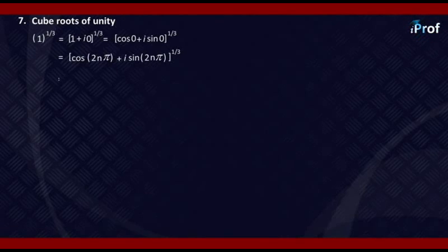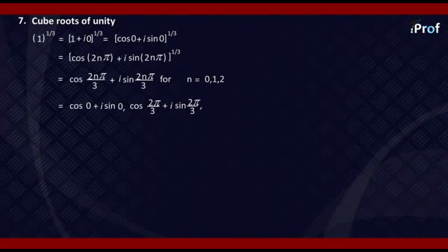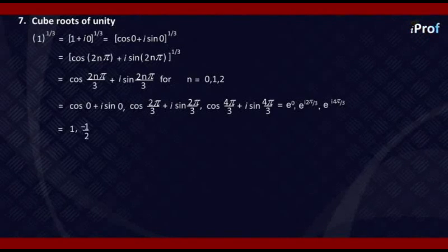Applying De Moivre's theorem, we get cos of 2n pi by 3 plus i sine of 2n pi by 3, for N equal to 0, 1, and 2. When N equals 0, you get cos 0 plus i sine 0. When N equals 1, you get cos 2 pi by 3 plus i sine 2 pi by 3. When N equals 2, you get cos 4 pi by 3 plus i sine 4 pi by 3, which can also be written as e raised to power 0, e raised to power i times 2 pi by 3, and e raised to power i times 4 pi by 3. The first value becomes 1, the second becomes minus 1 by 2 plus i root 3 by 2, and the third becomes minus 1 by 2 minus i root 3 by 2.